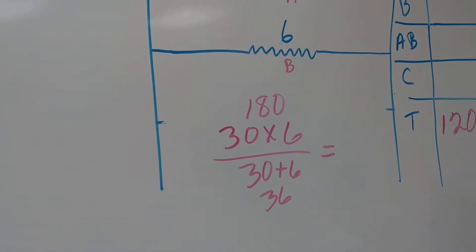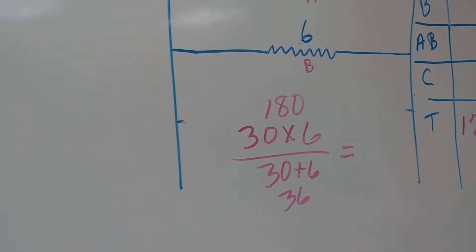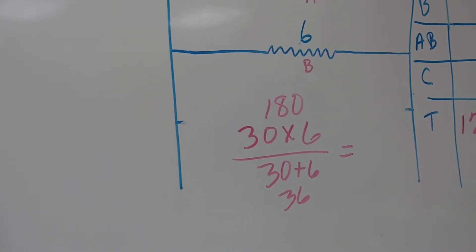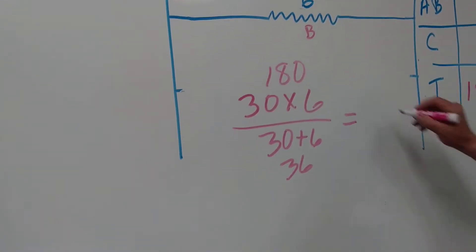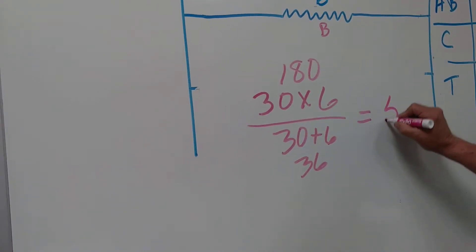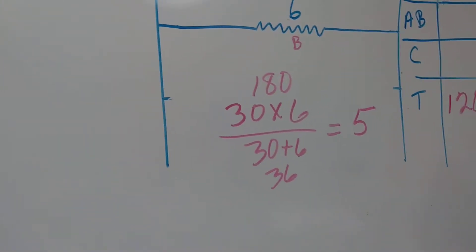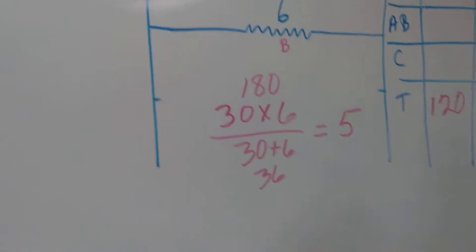So 30 times 6 is 180, 30 plus 6 is 36, and if I divide 180 by 36, I should come out with 5. Correct? Victor says it's correct, right? Yeah.